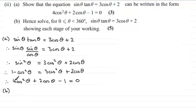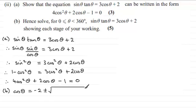Using the quadratic formula, where a is 4, b is 2, and c is minus 1. The formula is normally x equals minus b plus or minus the square root of b squared minus 4ac, all divided by 2a. In place of x we have cos theta, so cos theta equals minus 2 plus or minus the square root of 2 squared minus 4 times 4 times minus 1, all divided by 2 times 4.